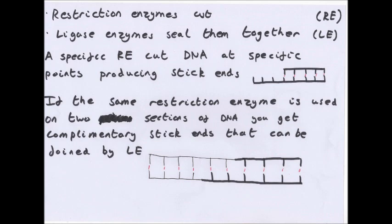It's usually less than 10 bases long. The restriction enzymes will cut and ligase enzymes will seal them together. A specific restriction enzyme cuts DNA at specific points producing sticky ends.